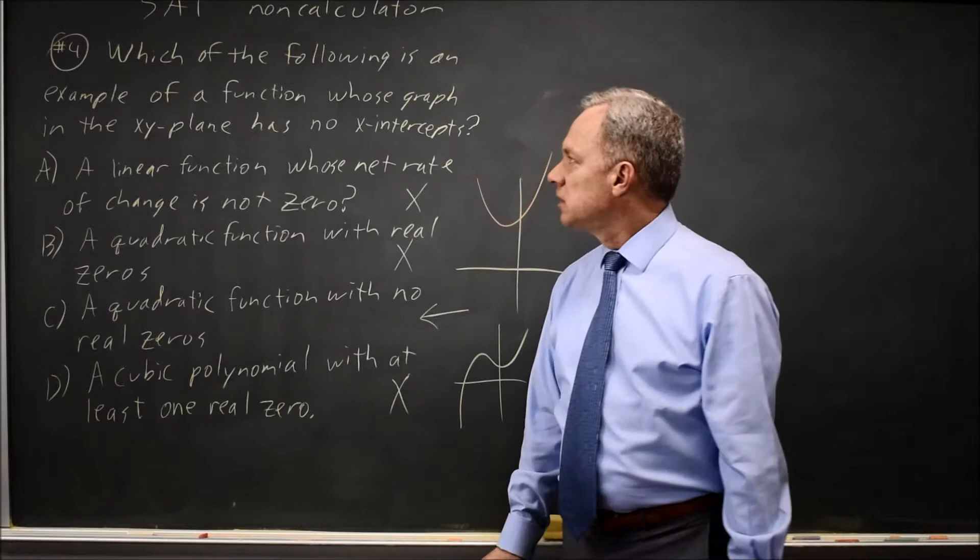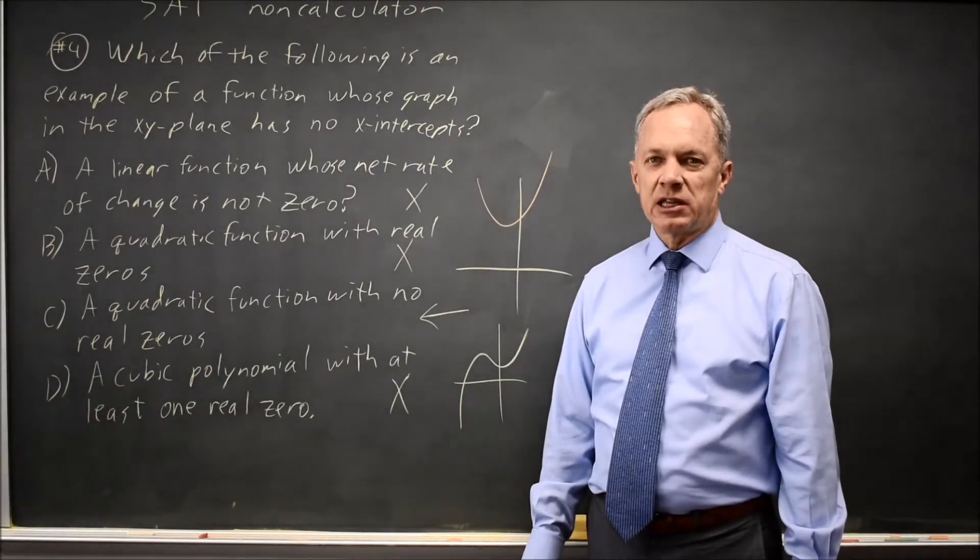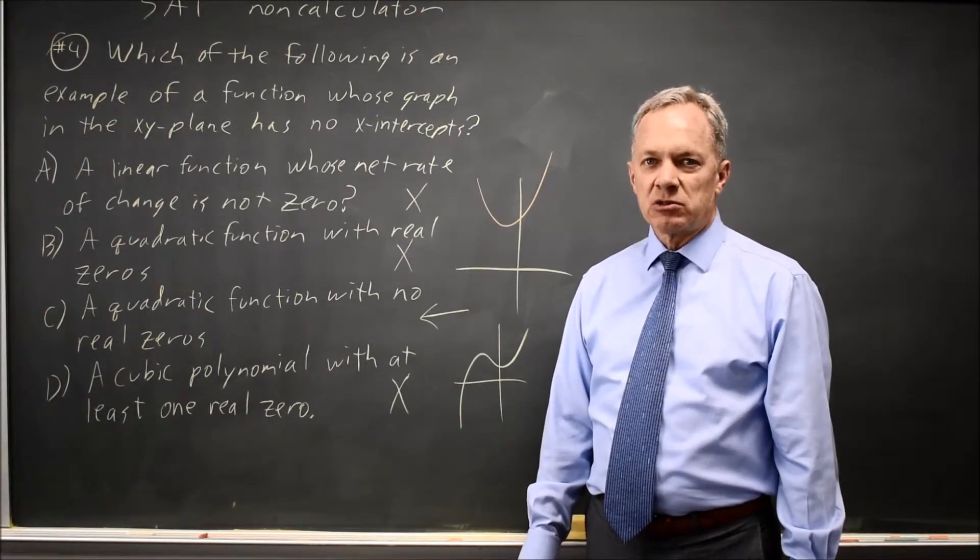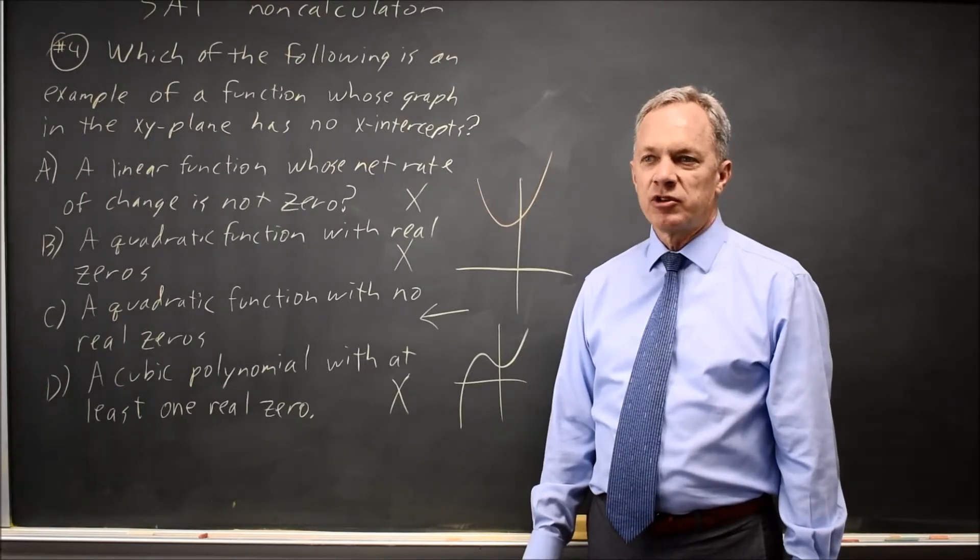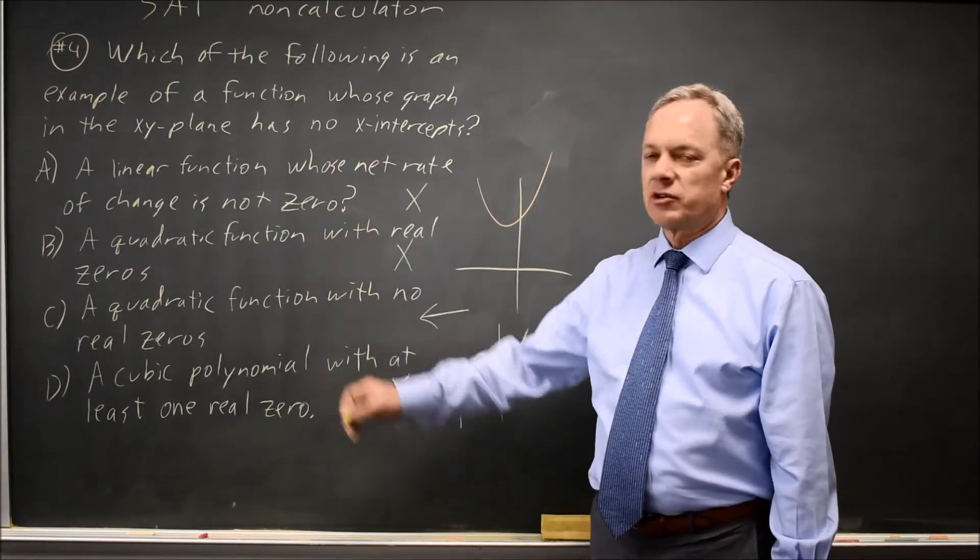Only choice C is an example with no x-intercepts, and that's what they're asking for. College Board often asks about the graph of a linear equation, quadratic, or a cubic.